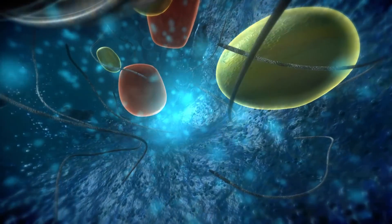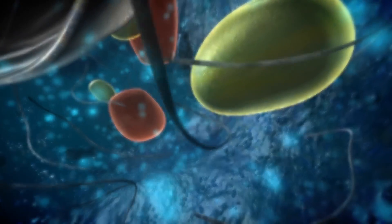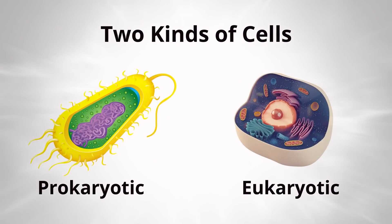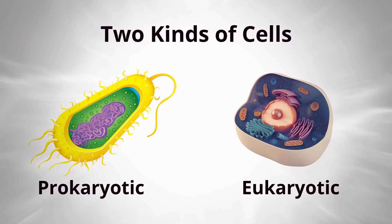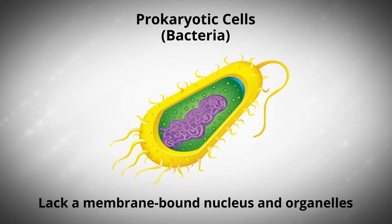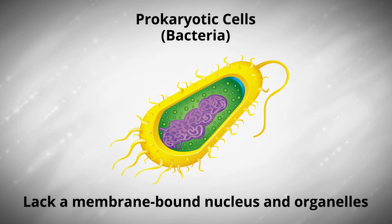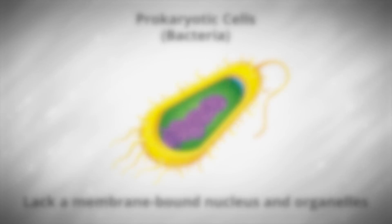Let's take a look at what a cell is made of. There are two main types of cells: prokaryotic cells and eukaryotic cells. Prokaryotic cells, like bacteria, lack a membrane-bound nucleus and organelles.